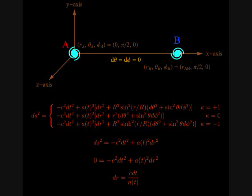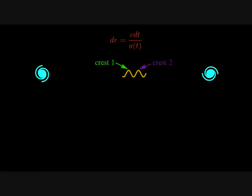dr is the co-moving distance that the photon travels in a time dt. Let's think of the photon as a wave, instead of as a particle. In particular, let's focus on two successive crests, which we will call crest 1 and crest 2.